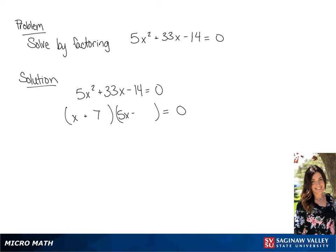So our second terms are going to be 7 and negative 2. So we have x plus 7 times 5x minus 2 equals 0.